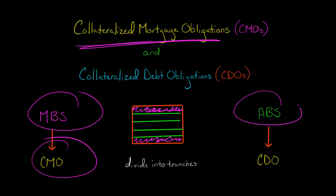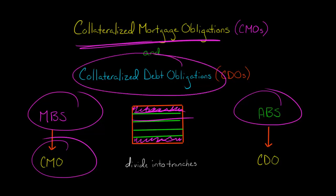If you take an asset-backed security — which includes credit card receivables, car loans, or any pool of loans, including corporate debt — and you slice it up the same way, then you've got a collateralized debt obligation, a CDO.